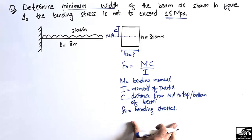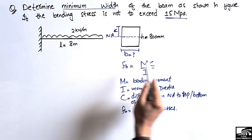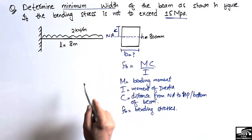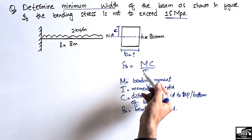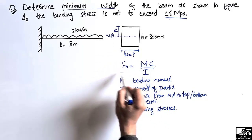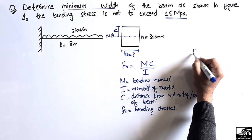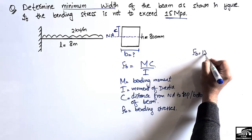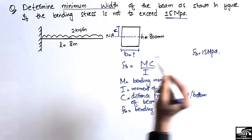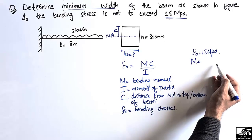Now we know what the bending moment value is, what the C value is, what the moment of inertia is, and what the bending stresses are. With the help of these we will find out the B value. Fb is given to us as 15 MPa. The moment value is unknown, so we have to find it out.